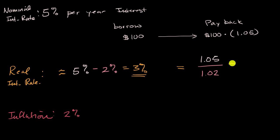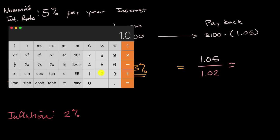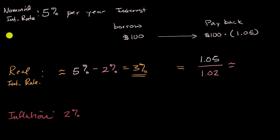And so this is going to give us 1.05 divided by 1.02 is equal to 1.0294.